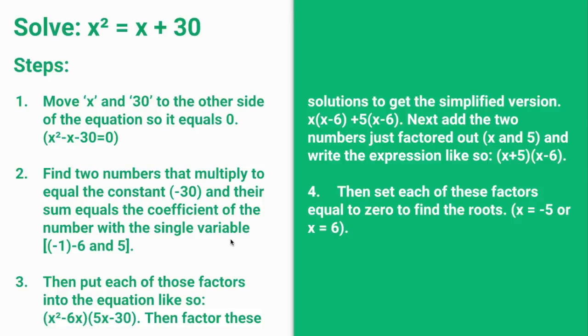We are going to plug these two numbers into the equation. You write it as x squared minus 6x plus 5x minus 30. You are replacing these two numbers for the middle term.